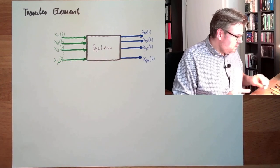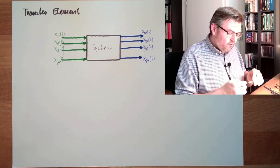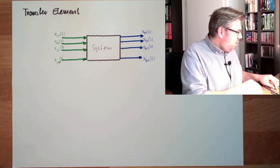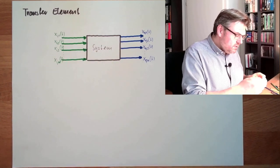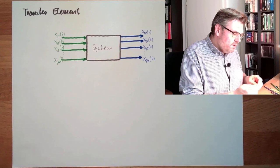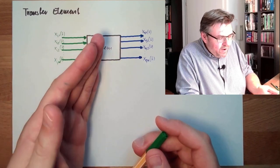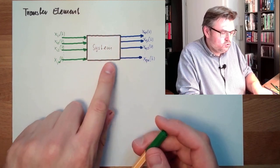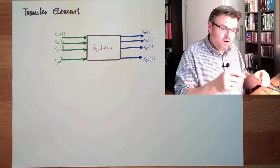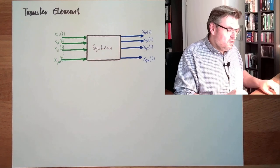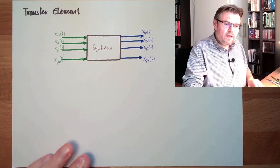The system now is, in our system theory, the system now is representing a transfer element. So all inputs here, all inputs are transferred somehow to the output. So the inputs are influencing the outputs, and the system can be seen as some sort of transfer element, which the values from the input will be transferred to values from the output.